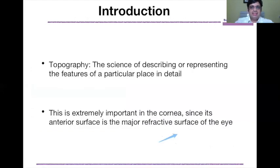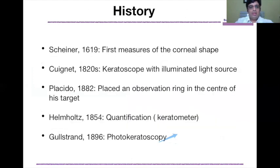So what is corneal topography? It is the science of describing or representing the features of a particular place in detail. This is extremely important in the cornea since its anterior surface is the major refractive surface of the eye. The concept of corneal topography is not new — it came about 400 years ago. Scheiner introduced the concept when he held up glass spheres of different shapes and sizes close to a patient's cornea, projecting the same object onto both the cornea and the glass sphere.